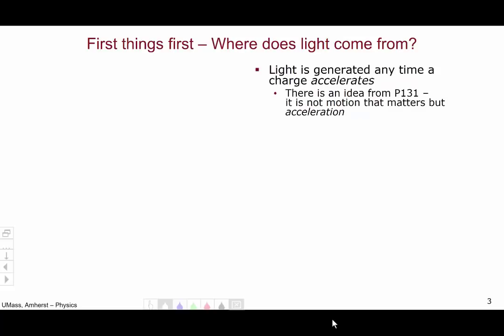Light is generated any time a charge undergoes acceleration. This is a connection to an idea from Physics 131. Now, just like in Physics 131, it's not the motion of the charge that matters, but its acceleration. So moving charges don't generate light, only accelerating ones do.